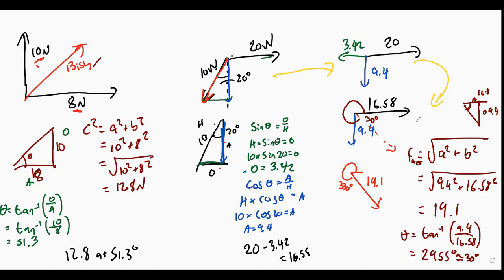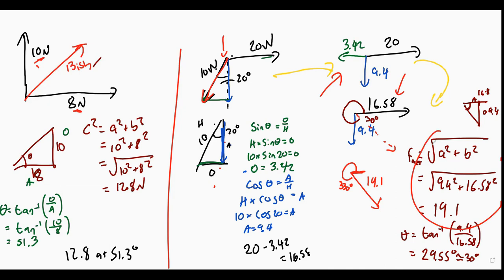Where do you start measuring the angle? You always start from straight to the right, going anti-clockwise. So to break this down: first we had to break down the vector into components. Then we made sure we added the net forces together at right angles. Then we brought it together using Pythagoras and found the angle.